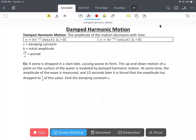In this video we're going to go over another example of damped harmonic motion where it's asking to find the damping constant c. So for this case it doesn't matter which one we use, sine or cosine.